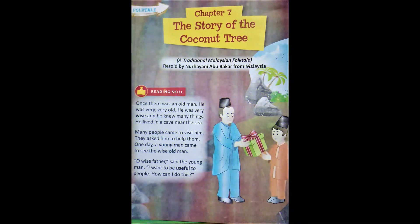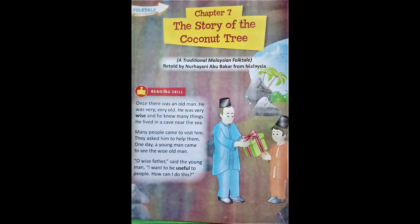First we will do the reading. The Story of the Coconut Tree. Once there was an old man. He was very, very old. He was very wise and he knew many things.